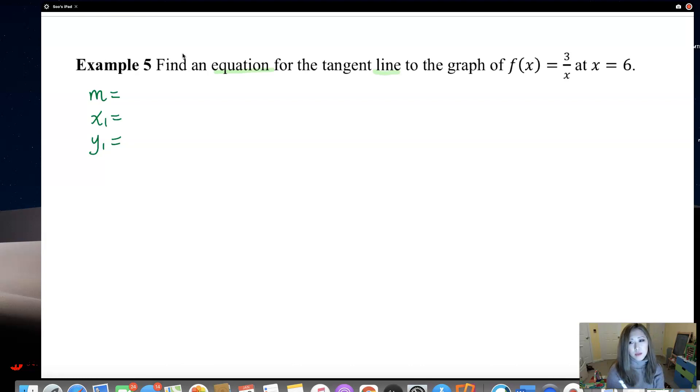They gave us the x value over here, x is 6, so I'll say x1 is 6. If we know an x value, we can find the y value by plugging in that x value into the function. The function is 3 over x, when x is 6, f of 6, if you plug in 6 in here, that is going to be 3 over 6. If you simplify that, y value comes out to be half. So y1 is half, so we already have two out of three things.